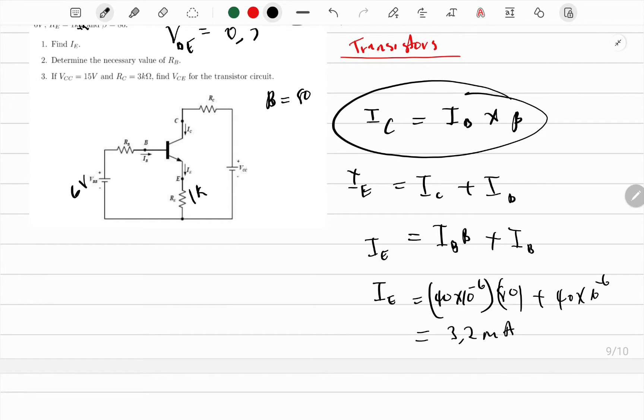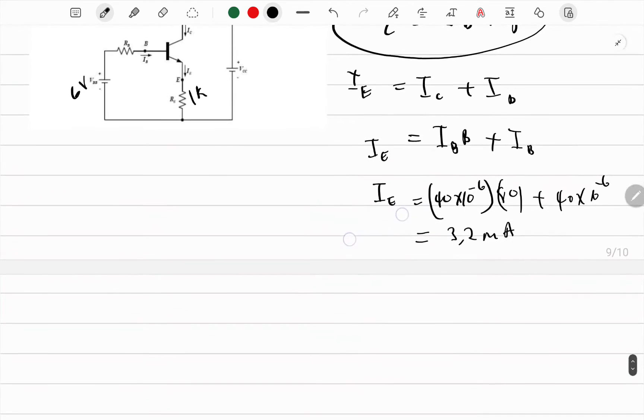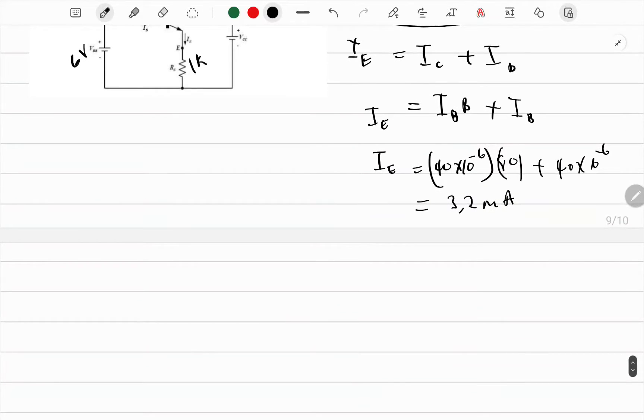If you compute this, you get an answer of 3.2 milliamps. I hope I didn't make this mistake in the previous video. Current in the collector should be equal to current in the base multiplied by β. This looks like it's going to be a correction video. Let me put this here so you can check. Alpha is your other gain.